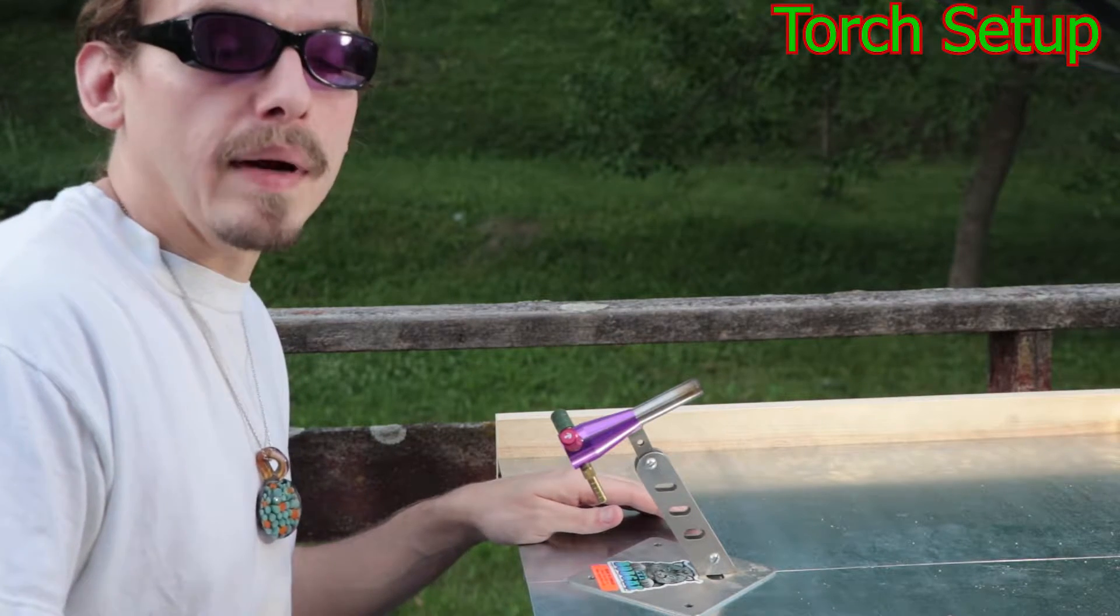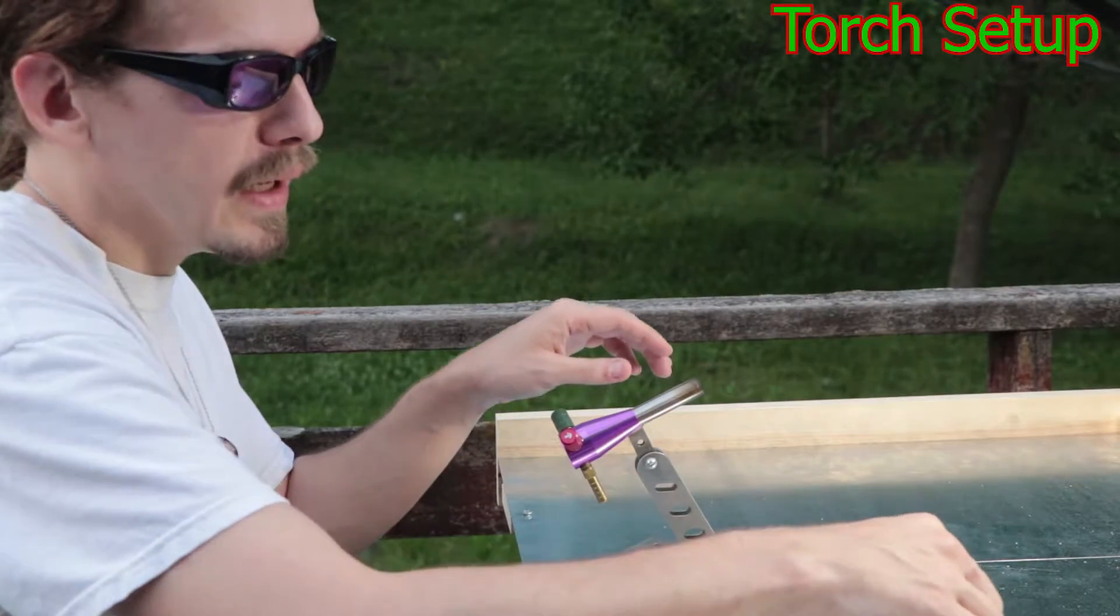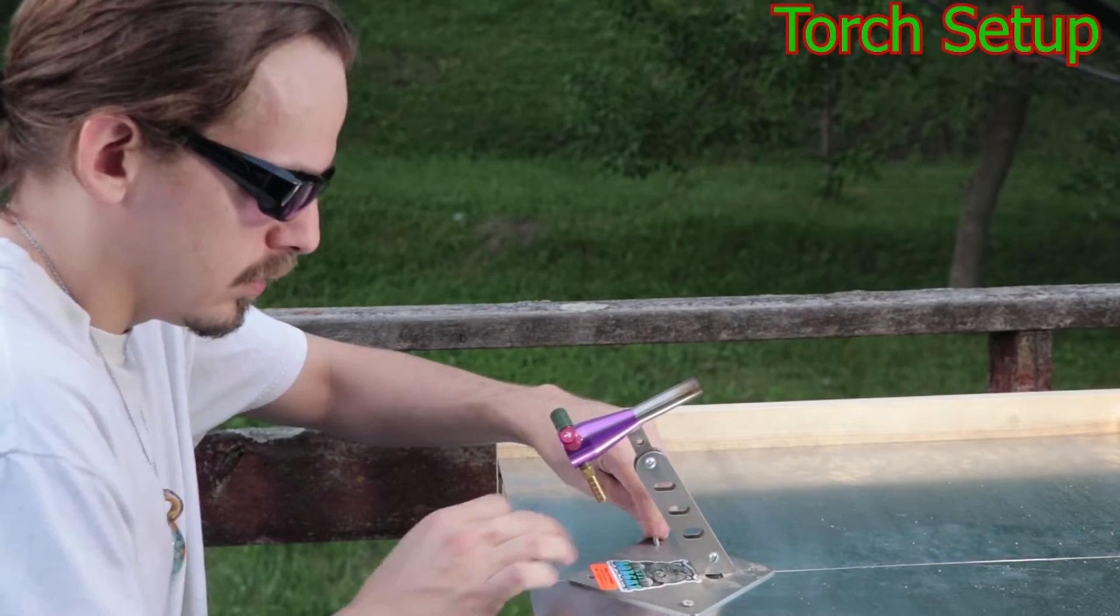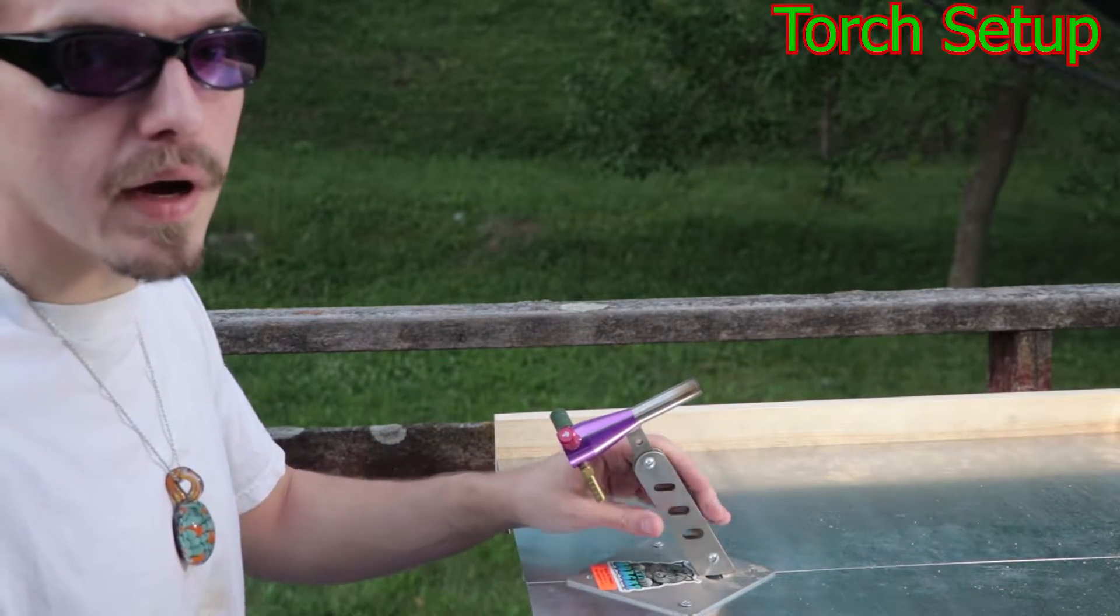So I'm going to start off by mounting my torch down on this new bench I made. It's always good to mount your torch to your bench. That'll help them keep it from coming back at me or rolling around.